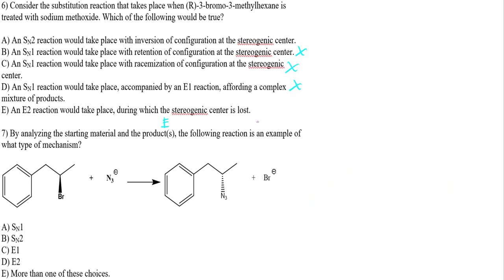Now another practice problem dealing with mechanisms. We have an aryl group — we're not reacting with that, so we ignore it. Notice that we have an inversion of stereochemistry. So it's not E2 or E1, because E1 or E2 gives a double bond placement. Do you see any double bonds? No. So it's not C or D.